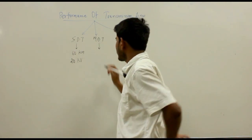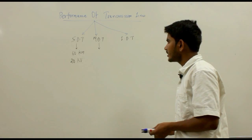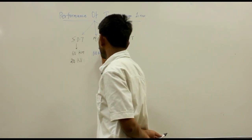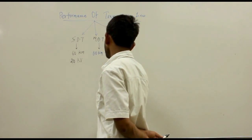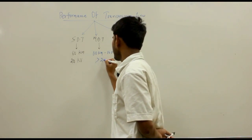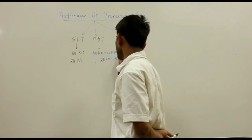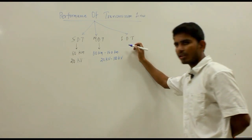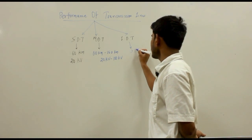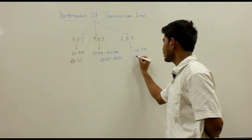The medium distance transmission line has a line length in between 60 km to 160 km and the voltage level is 20 kV to 100 kV. The long distance transmission line has a line length greater than 160 km and the voltage level will also be greater than 100 kV.